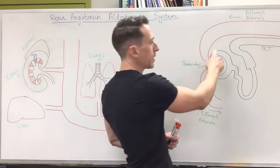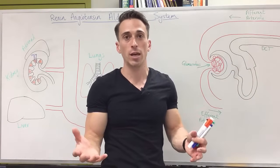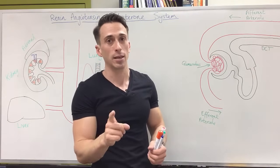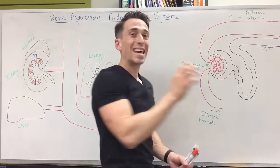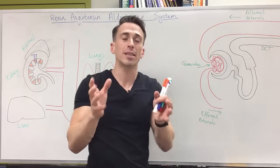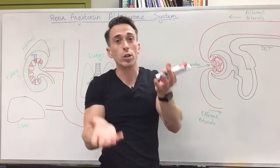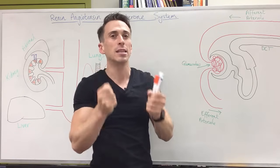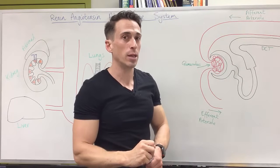Of that 180 litres produced per day, we don't excrete all of it. We only urinate about 1% of that — 1.8 litres. So 99% of what we filter at the glomerulus is thrown back into the body, back into the bloodstream. The kidneys are essentially weighing up exactly what we need and what we don't. This is why the kidneys must maintain a consistent glomerular filtration rate of 120 millilitres per minute.